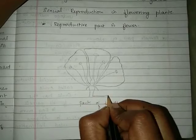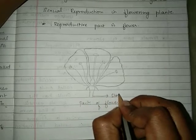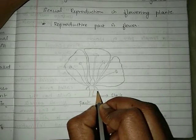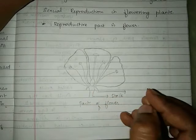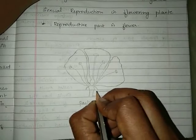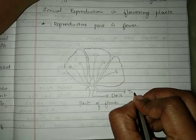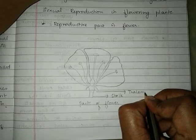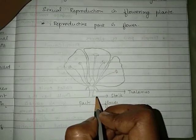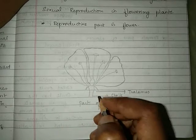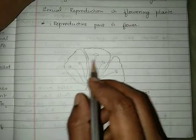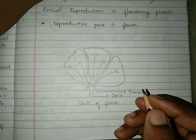This is the stalk of the flower from which the flower arises. The end of the stalk is a thick fleshy bulged structure called the thalamus. The complete flower parts are going to be formed from the thalamus.